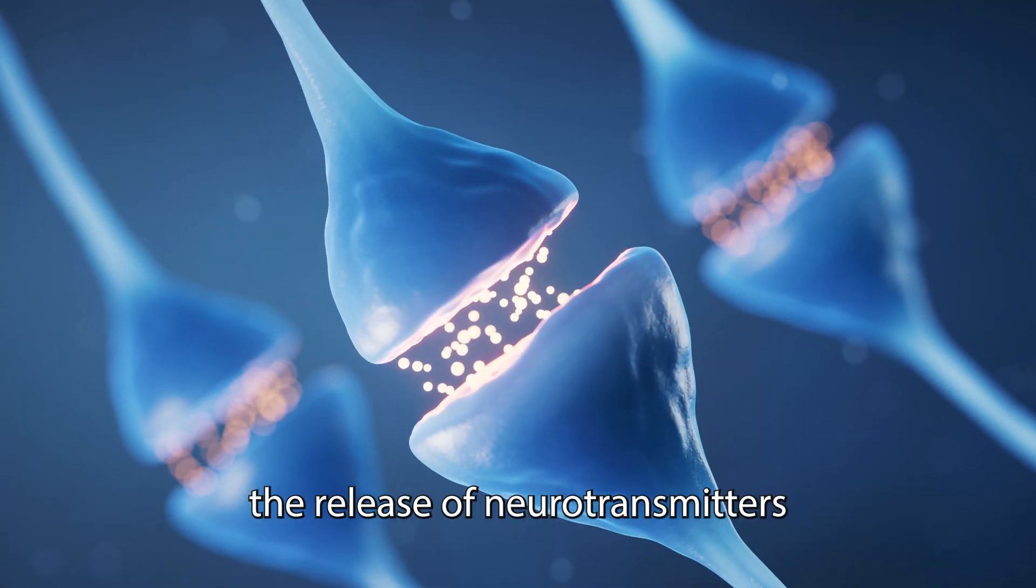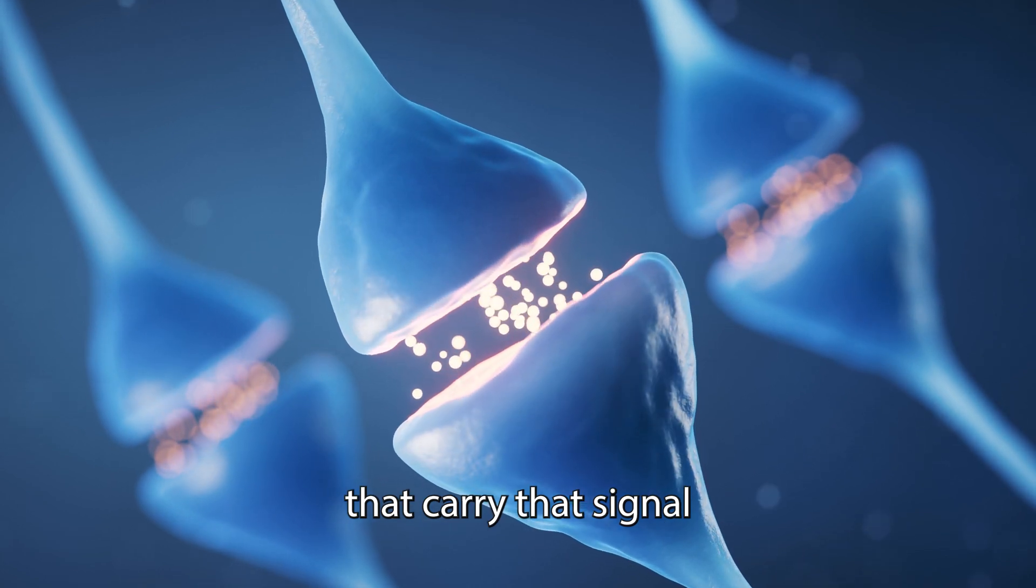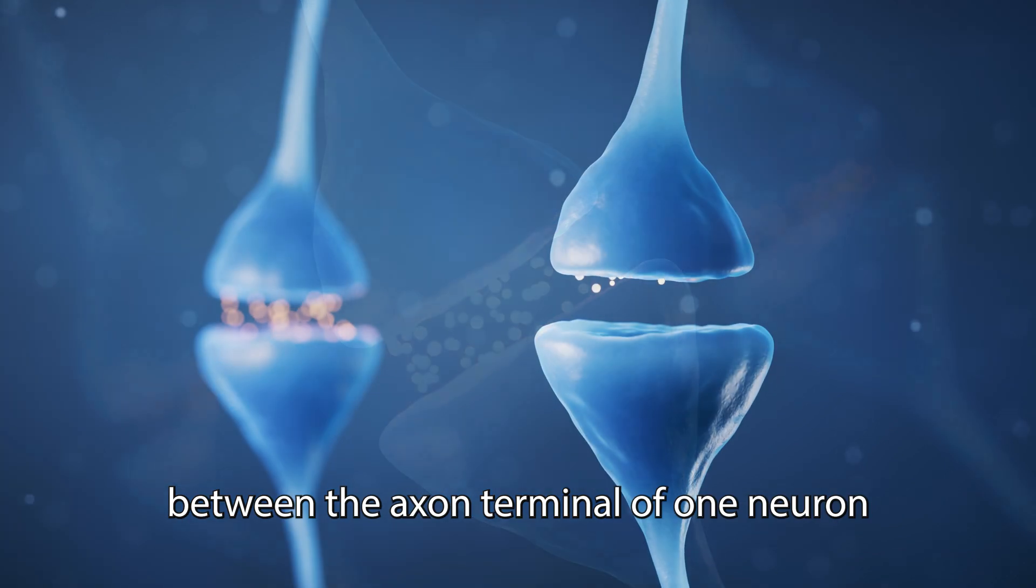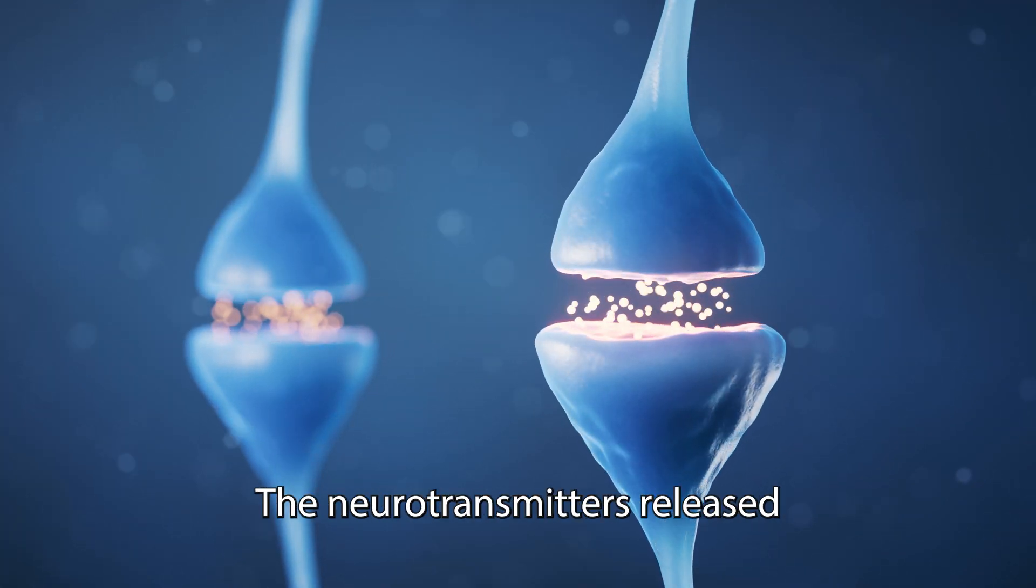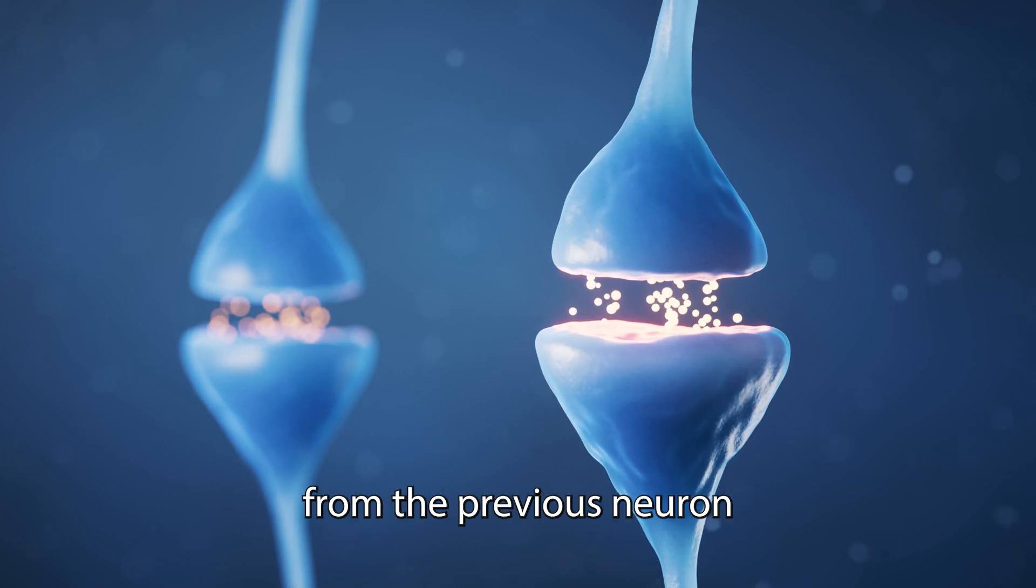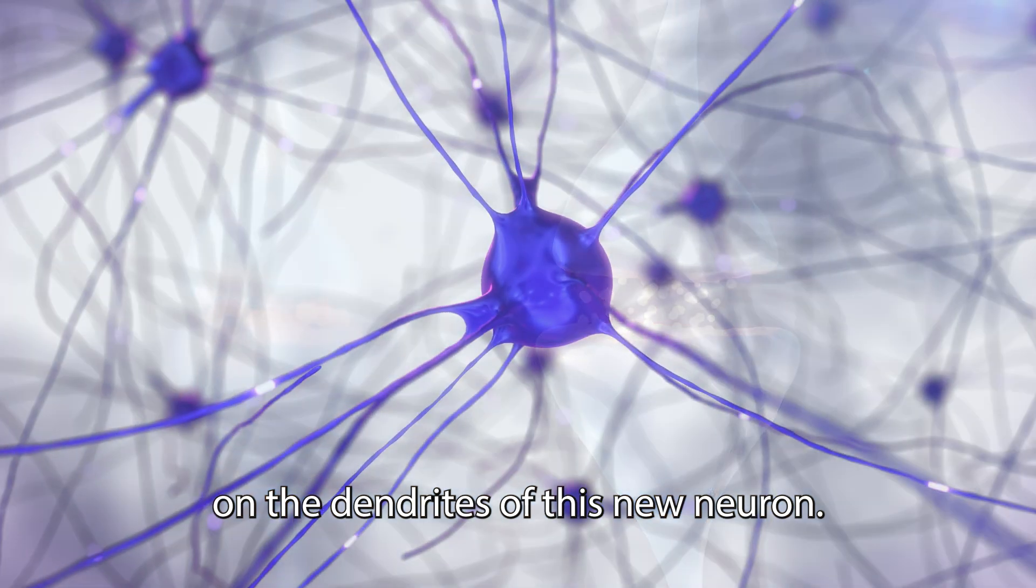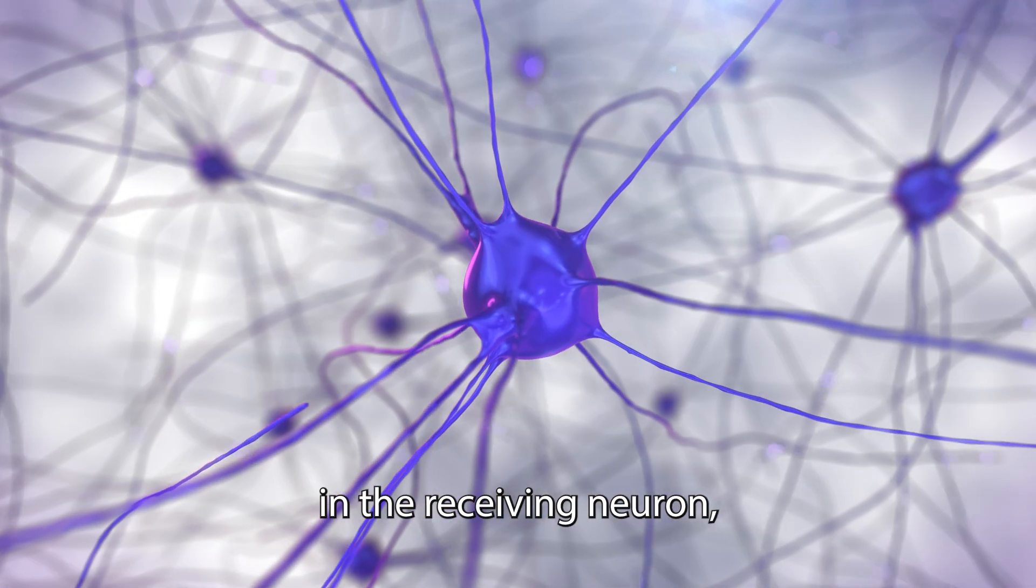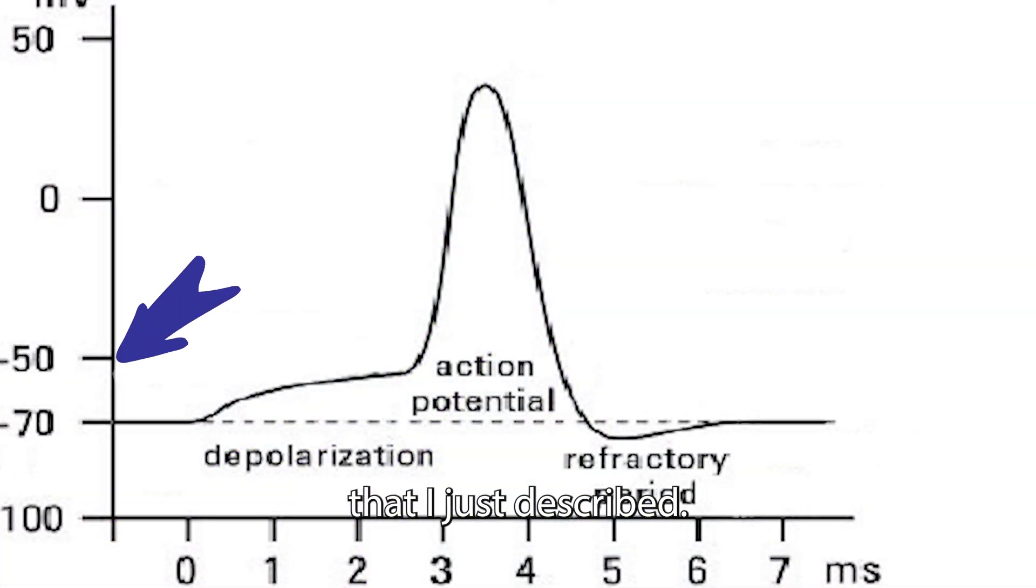Neurotransmitters are chemical messengers that carry that signal across the synapse, which if you remember is that tiny gap between the axon terminal of one neuron and the dendrites of the next neuron. The neurotransmitters released from the previous neuron will bind to specific receptors on the dendrites of this new neuron. This binding process creates a new electrical charge in the receiving neuron, and then it initiates the same sequence of steps that I just described.